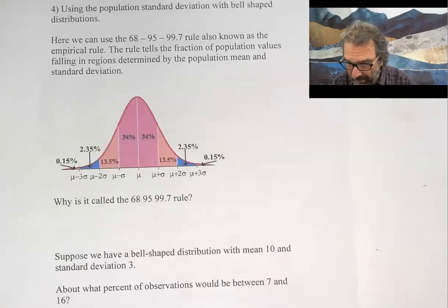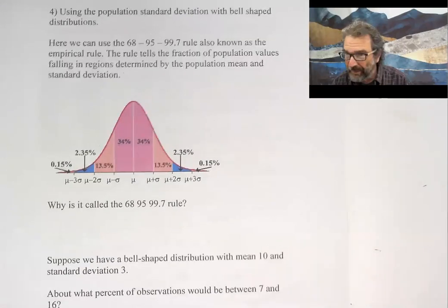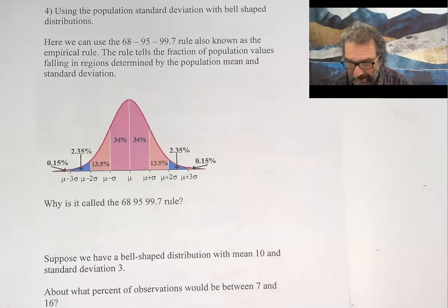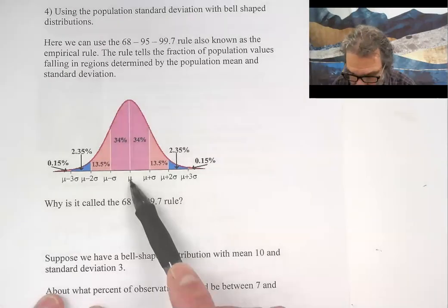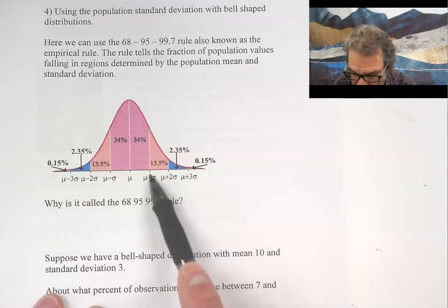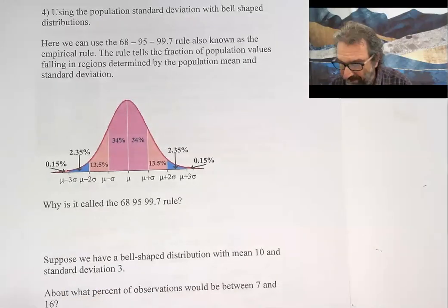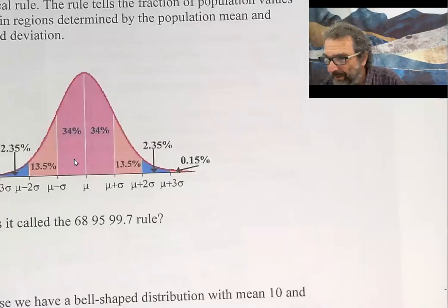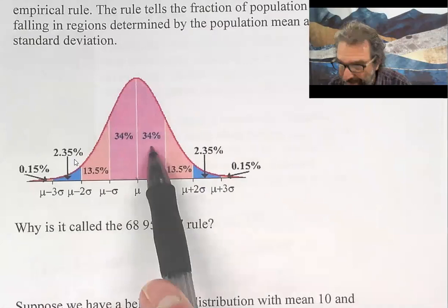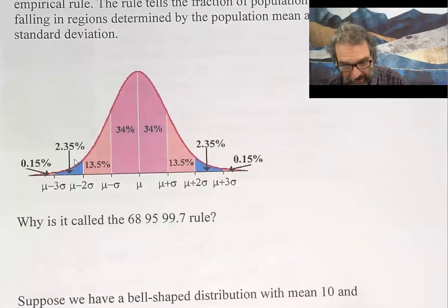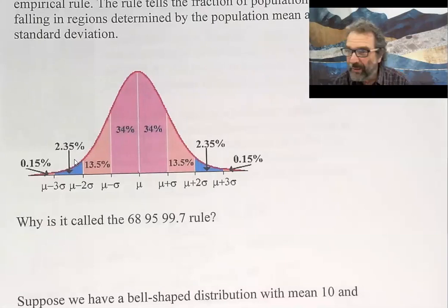Next, we have using the population standard deviation with bell-shaped distributions. There's something called the 68-95-99.7 rule, sometimes known as the empirical rule. For bell-shaped distributions, if you start at the mean and mark it off in standard deviation units, there's a tendency for the values to follow this pattern. Between the mean and one standard deviation, about 34 percent of the values.